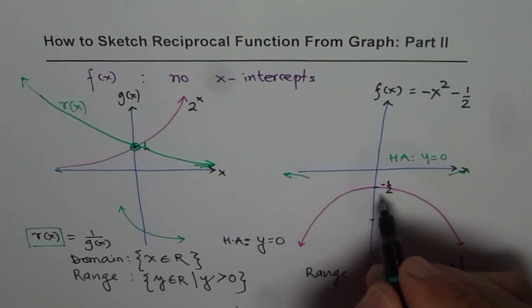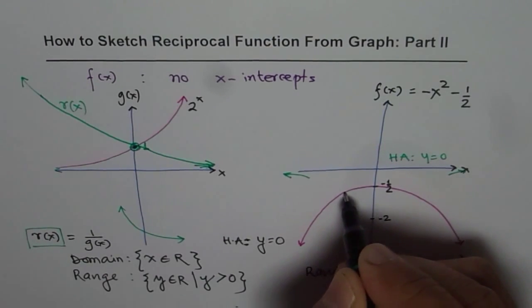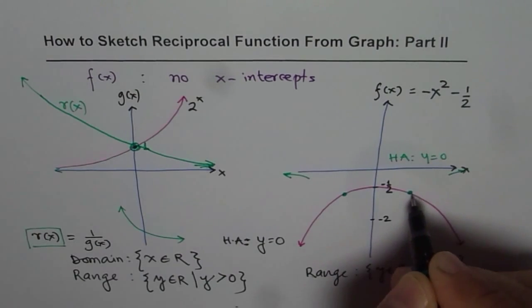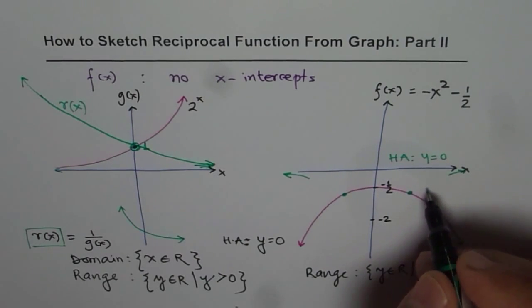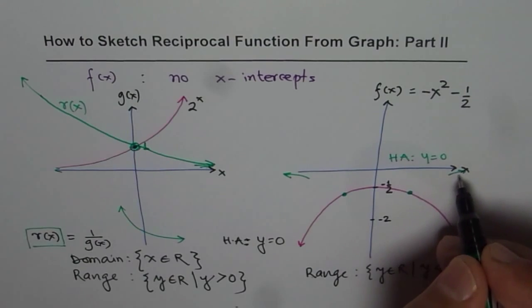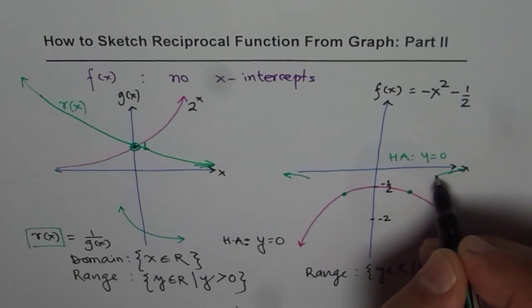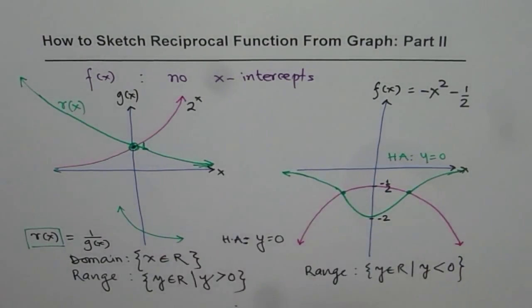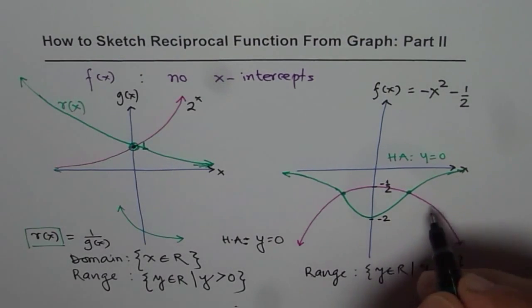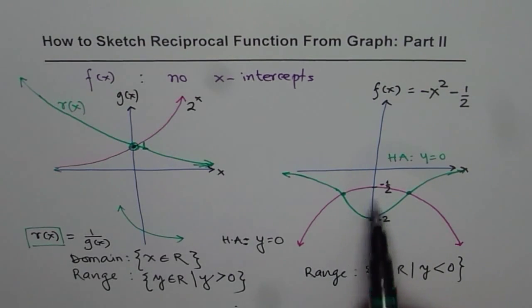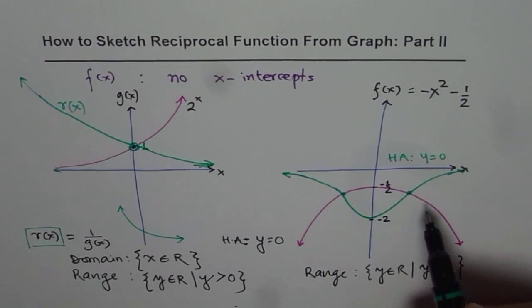There will be some points where the function value equals negative 1 — let us say those are symmetric values around the vertex. At those points the reciprocal also equals negative 1, making them invariant points common to both functions. If we sketch using these invariant points and the approach toward 0 on both sides, we get a graph that looks like an inverted bell shape — symmetric, approaching the horizontal asymptote on both ends.